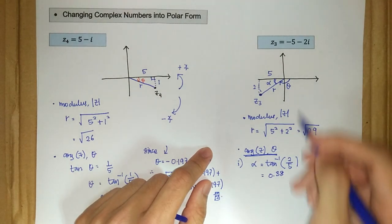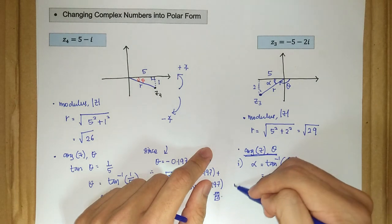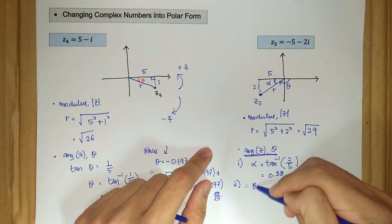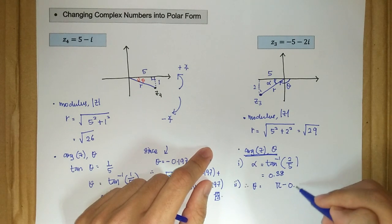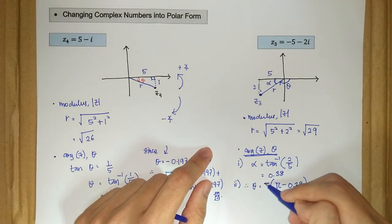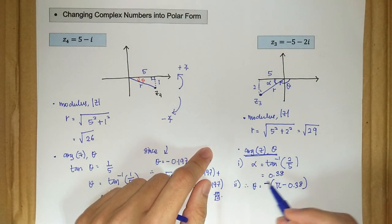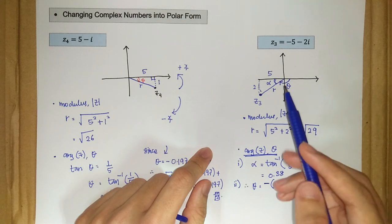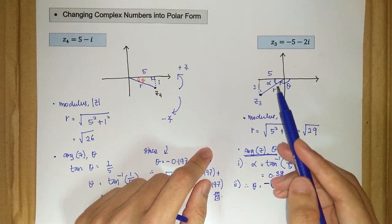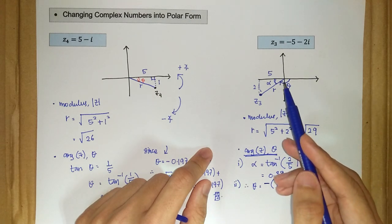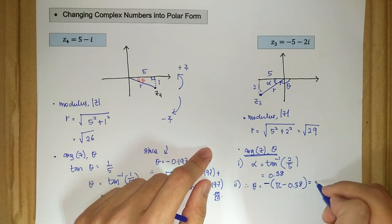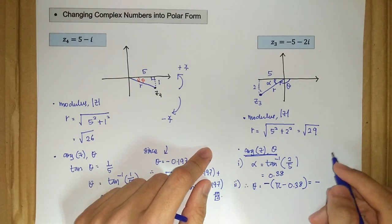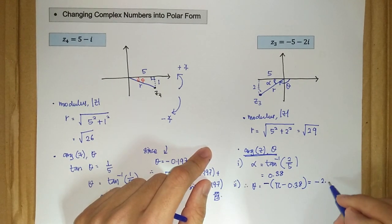Therefore, for our theta, so our next step is therefore theta is pi, 180 minus our 0.38, but with negative on the outside where the negative on the outside represents that we move in clockwise rotation direction here. So our argument is negative 2.76 radian.